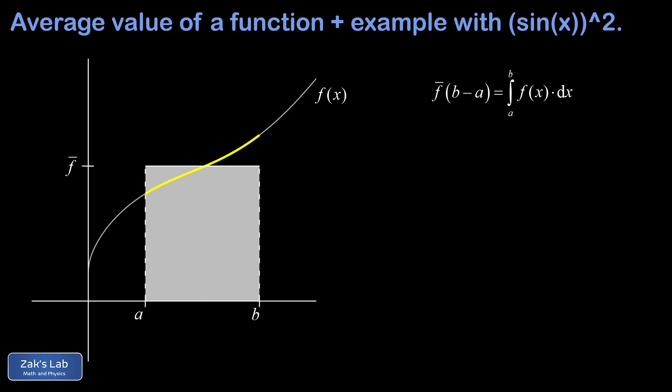So that's the integral from a to b of f(x) dx. We quickly isolate f-bar here, and f-bar is just 1 over (b - a), that's the interval width, times the integral from a to b of f(x) dx. So there's our general definition of the average value of a function on a given interval.